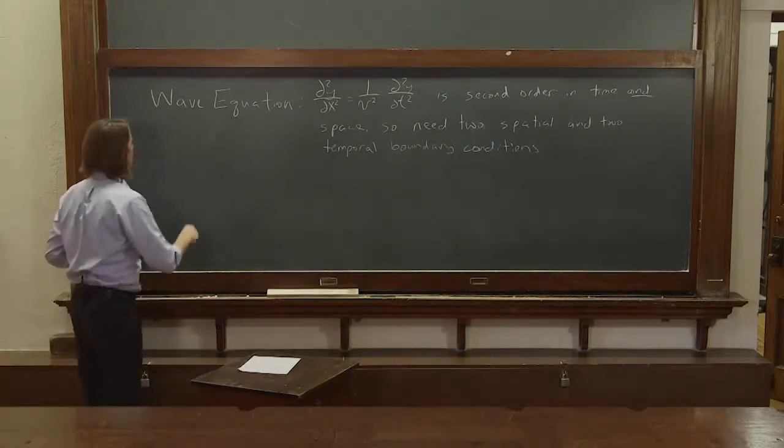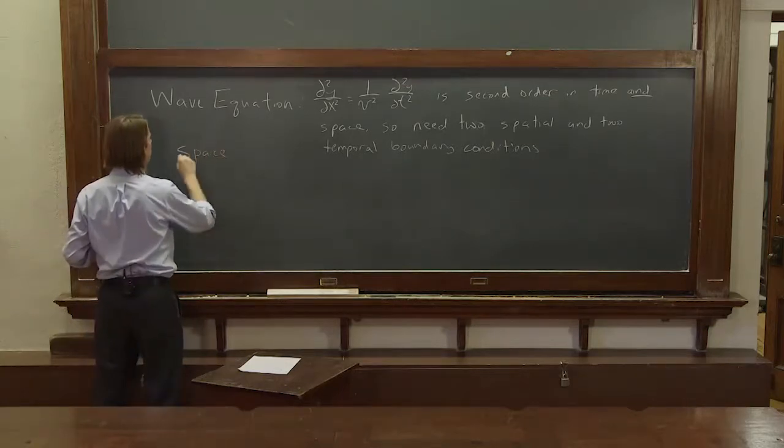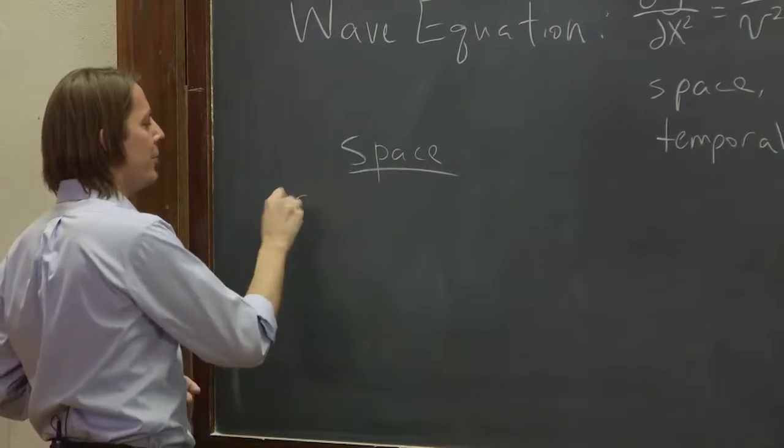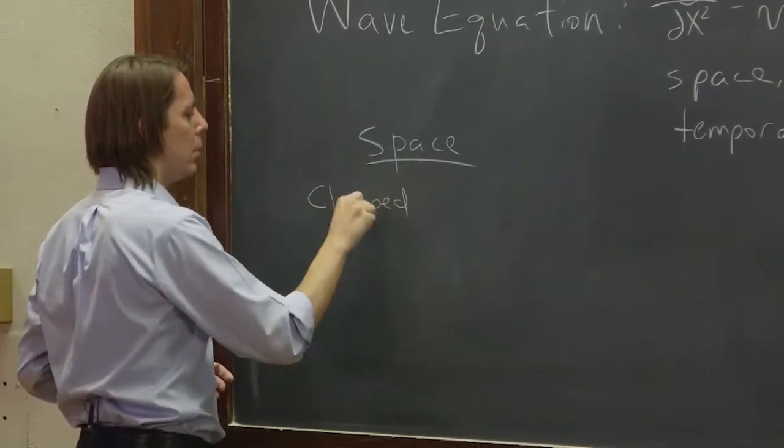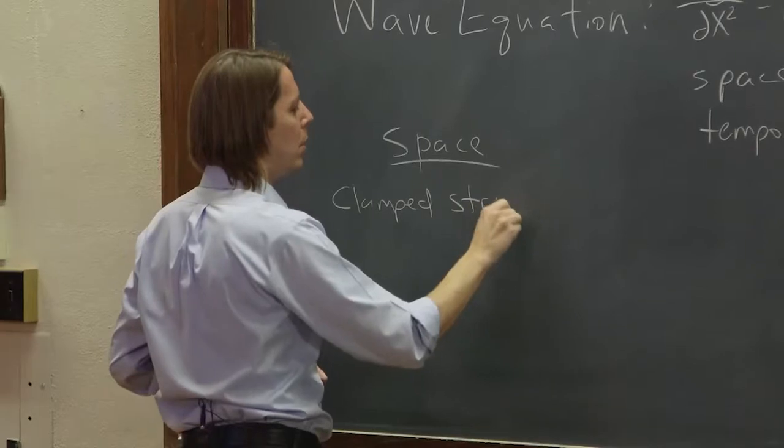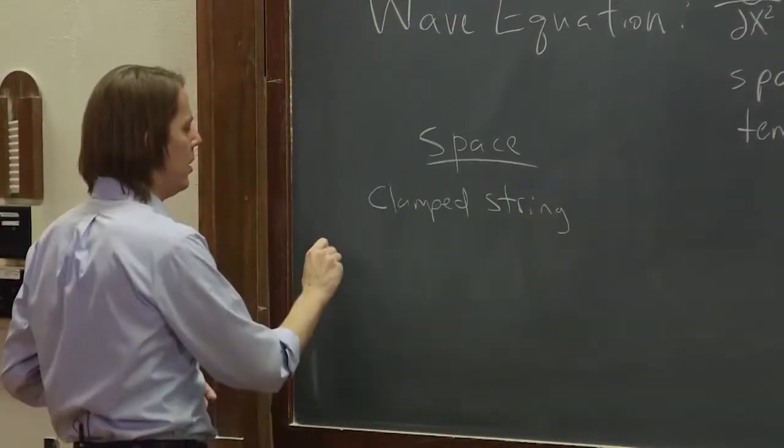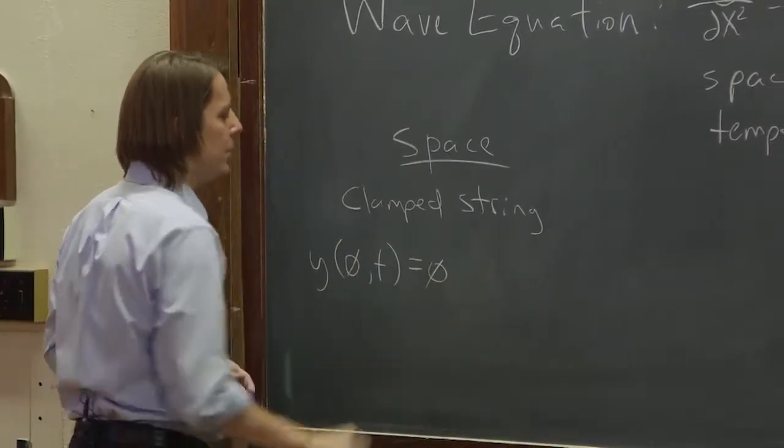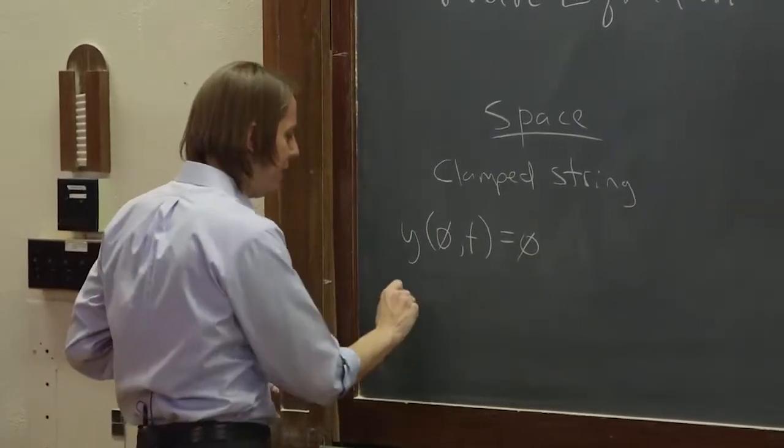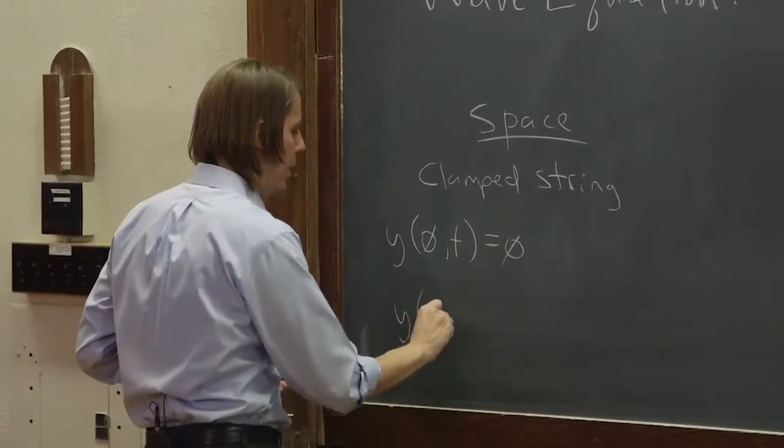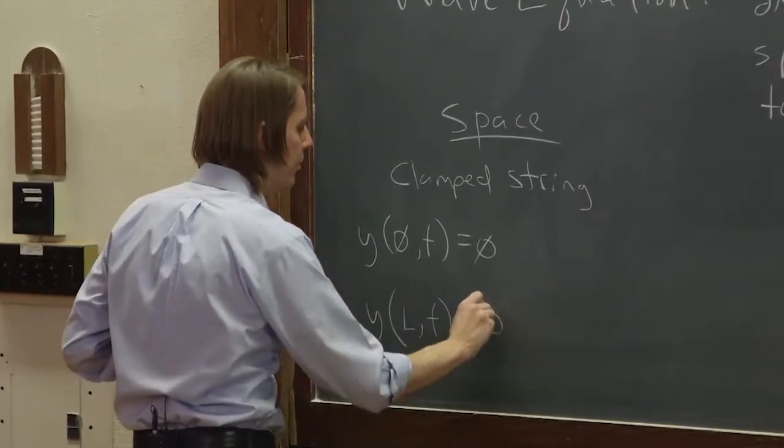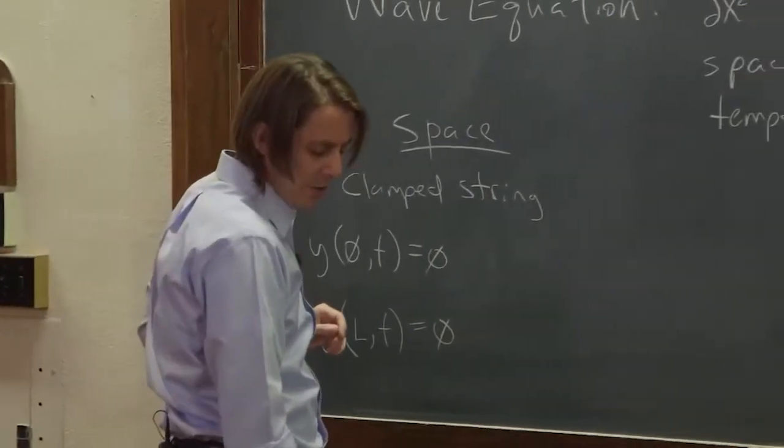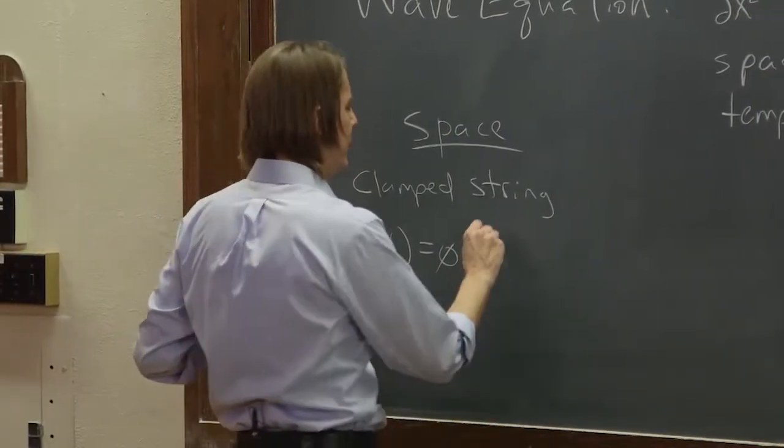Well, let's look at space first. In space, we have the fact that we're working with a clamped string. So we know that y of 0 for all time is going to be 0. That's the clamp at the left. And we know that y at L for all time is going to be 0. So there's two spatial boundary conditions. I like to call them a certain point in space for all time.